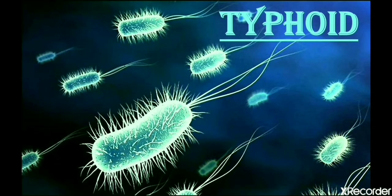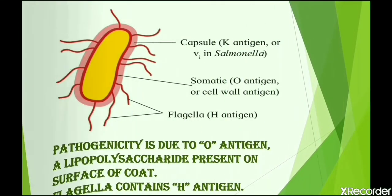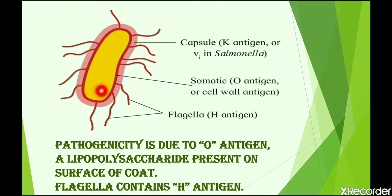The next disease is typhoid. This is an acute infection of the intestine. It is caused by Salmonella typhi, a gram-negative bacteria found in the intestinal lumen of an infected person. The bacteria consist of a cell wall coat having O antigen and flagella having H antigen. Pathogenicity is due to the O antigen, a lipopolysaccharide present on the surface of the coat, whereas the flagella contain H antigen.